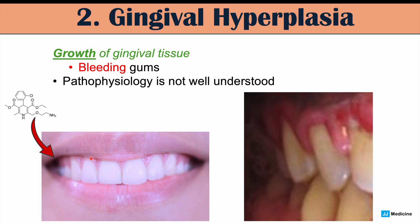It's estimated that less than 1% of patients who take amlodipine get gingival hyperplasia. Individuals more likely to develop it are those with poor dental hygiene, so it's important to maintain good dental hygiene. If you notice any changes in the gingiva, you can switch to an alternative medication, because this is an irreversible process — once there is gingival hyperplasia, it won't go away.